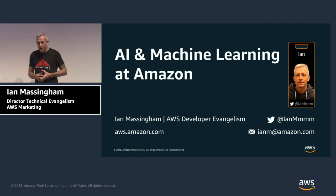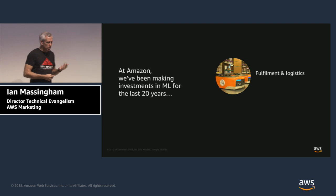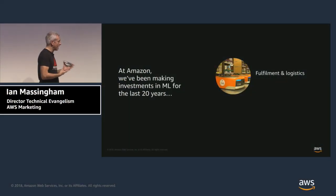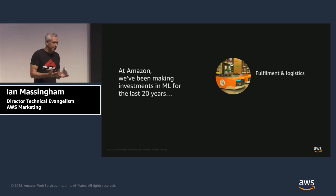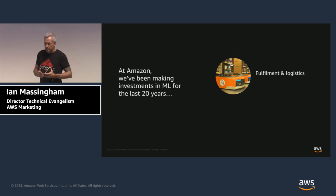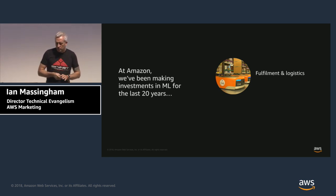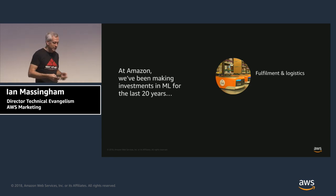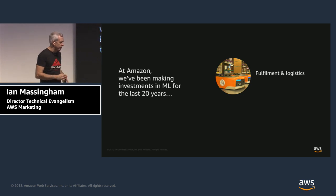We're going to jump around those two topic areas during the course of this first session. First, we're going to look at how Amazon uses machine learning to build really distinctive and unique experiences for our customers — a lot of which you will have either used directly or benefited from inadvertently. We've been doing this for over 20 years, so we have a lot of experience within Amazon in using AI and ML capabilities to build really unique products and services. It spans many different areas of our business.